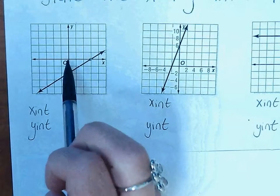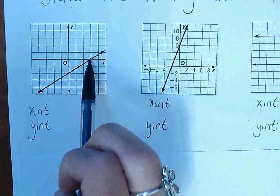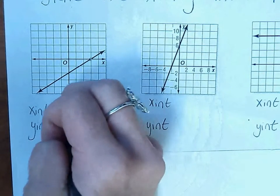So that point, start at the origin, and you're going to go 1, 2, 3 to the right. So the ordered pair is 3, 0.